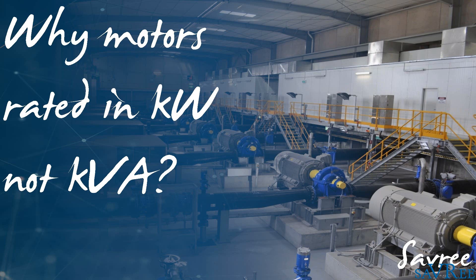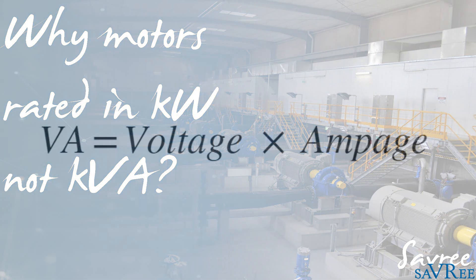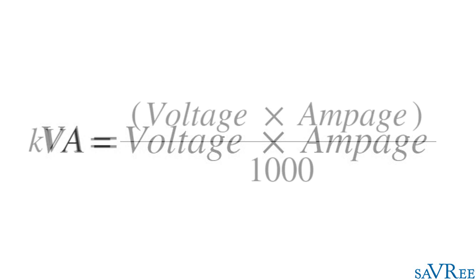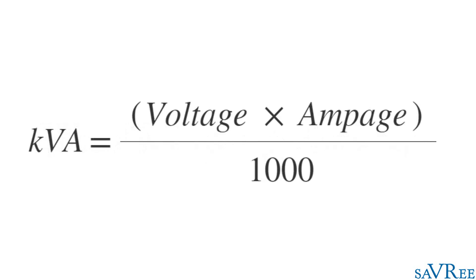Now, in order to understand this, we need to have a look at the equations for voltage ampere and watts. Voltage ampere equals voltage multiplied by amps. Kilovoltage ampere equals voltage multiplied by amps divided by 1,000.